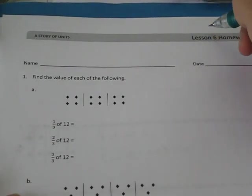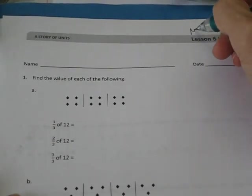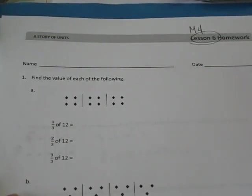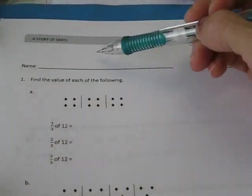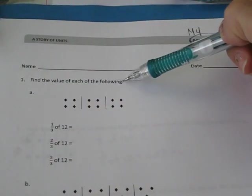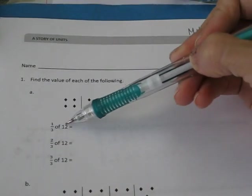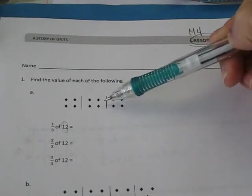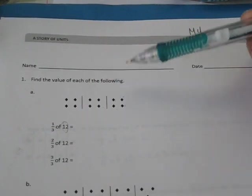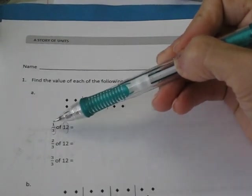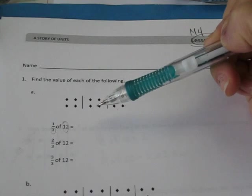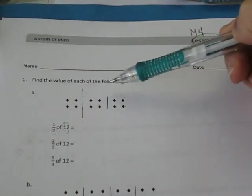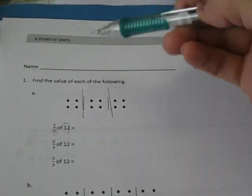Hey boys and girls, this is homework for Module 4, Lesson 6. It says find the value of each of the following. So we know we have a total of 12, so they went ahead and drew 12 diamonds. Our denominator tells us how many groups we need, so they went ahead and put them into 3 separate groups.